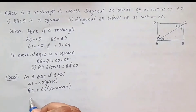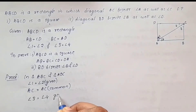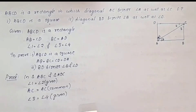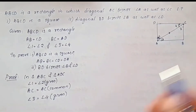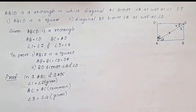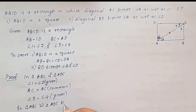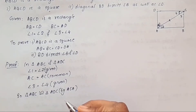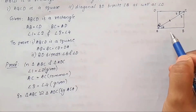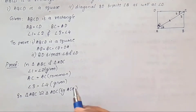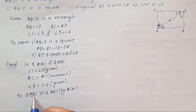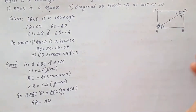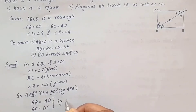Angle 3 is equal to angle 4, which is given. By ASA congruence rule, triangle ABC is congruent to triangle ADC. Therefore, by CPCT, AB is equal to AD, and BC is equal to DC.